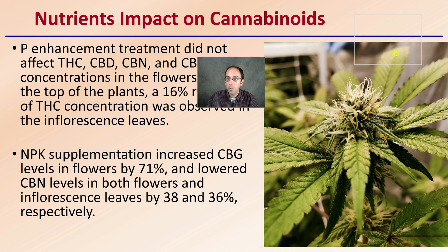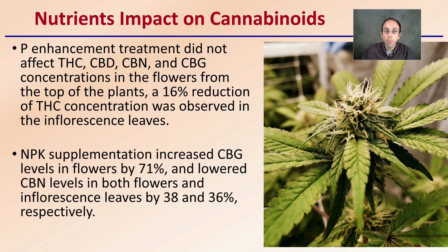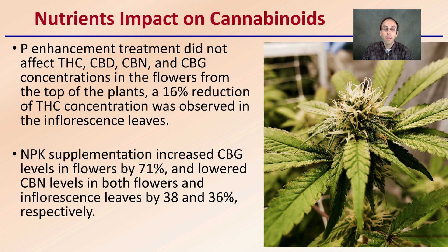Looking at nutrients' impact on the cannabinoids: phosphorus-enhanced treatment did not affect THC, CBD, CBN, or CBG concentrations in the flowers from the top of the plants, though a 16% reduction of THC concentration was observed in fluorescent leaves. The complete NPK supplementation increased CBG levels in the flowers by 71% and lowered CBN levels in both flowers and fluorescent leaves by 38% and 36% respectively. This highlights the importance of understanding which specific cannabinoids you're looking to produce or maximize.